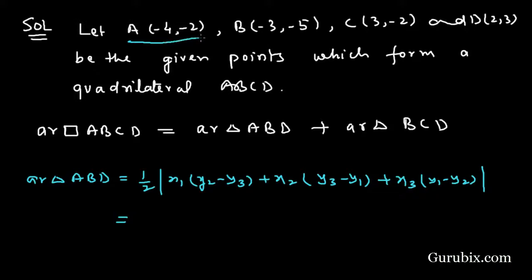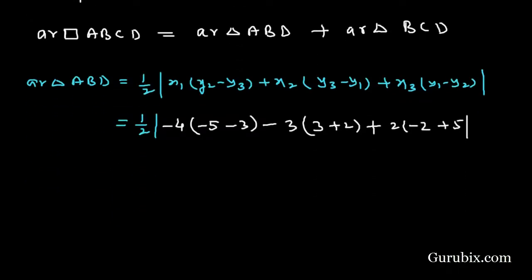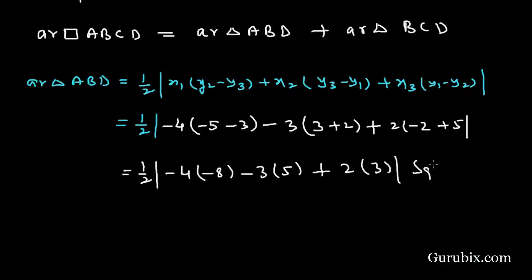For triangle ABD: x1 = −4, y1 = −2 (point A); x2 = −3, y2 = −5 (point B); x3 = 2, y3 = 3 (point D). Substituting: (1/2)|−4(−5 − 3) + (−3)(3 − (−2)) + 2(−2 − (−5))| = (1/2)|−4(−8) + (−3)(5) + 2(3)| = (1/2)|32 − 15 + 6| = 23/2 square units.